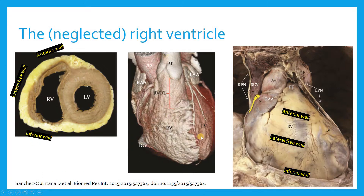Depending on how you look at the RV, this is actually a funny-shaped structure. The RV is not nice and circular or conical like the left ventricle. In fact, it kind of just wraps around the LV and has a pretty unusual shape. So depending on how you slice it, it actually ends up looking quite different — which is something you've probably noticed if you've tried looking at the RV in any echo capacity.